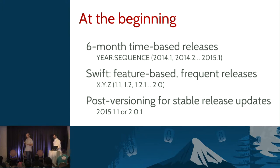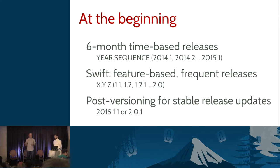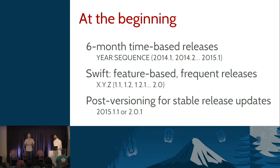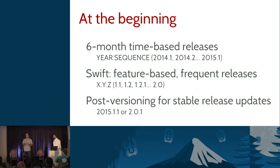In OpenStack at the beginning, we settled for a time-based release model with a six-month release schedule. We used a year-dot-sequence version numbering and pre-versioning with developmental milestones and release candidates until the end release. This worked quite well especially at the beginning where QA coverage was not so great - putting out early versions for packagers to test was really useful. Swift was always the cat that would not fit in that box - they were a more mature project and wanted to do more frequent feature-based releases.